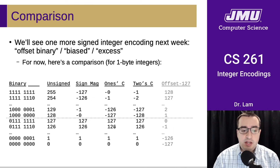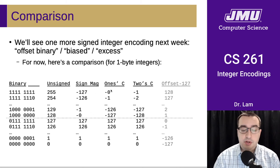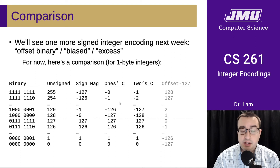One's complement is similar, where all the positive numbers are the same as their unsigned value. But one's complement flips the negative numbers and puts the largest absolute value number down at the bottom of the negative range.